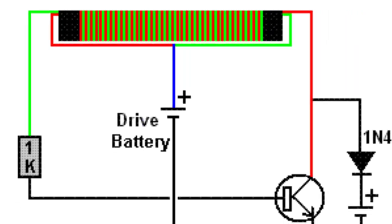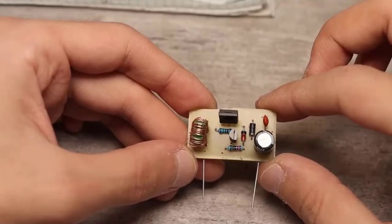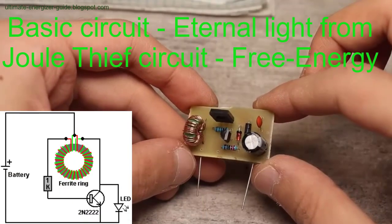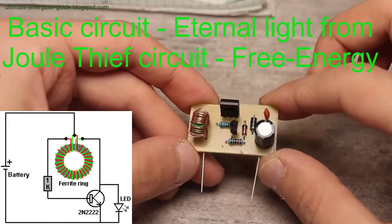The eternal light circuit from the Joule Thief has circulated within online communities and free energy forums for many years. Despite its widespread sharing, detailed explanations of its operating principles remain scarce. The Joule Thief circuit's ability to function effectively has intrigued many, prompting continued discussion and experimentation.